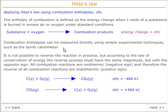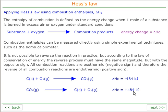We can't actually reverse the reaction in practice, but according to the law of conservation of energy, the reverse process must have exactly the same magnitude but the opposite sign. So if we look at the combustion of carbon — carbon plus oxygen gives carbon dioxide — the enthalpy of combustion of carbon is minus 484 kilojoules. This means that were we to drive the reaction in the opposite direction, from carbon dioxide back to carbon and oxygen, the magnitude must be exactly the same but the sign opposite.